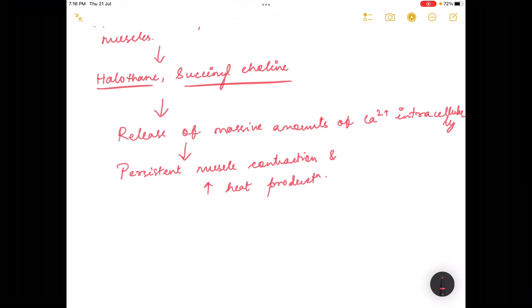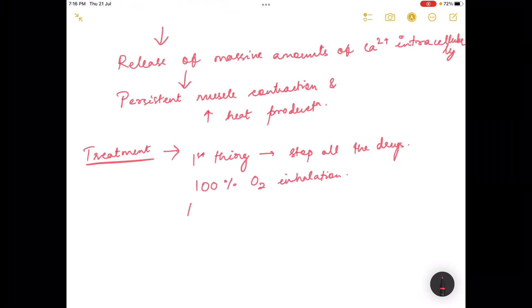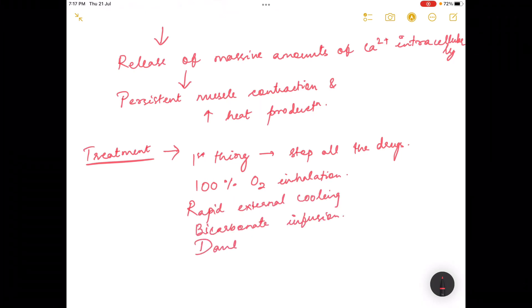This is called malignant hyperthermia. Now coming to the treatment, the first thing we need to do is stop all the drugs. Second, we can give 100% oxygen inhalation, rapid external cooling, bicarbonate infusion, and dantrolene. Dantrolene is the drug of choice in malignant hyperthermia.